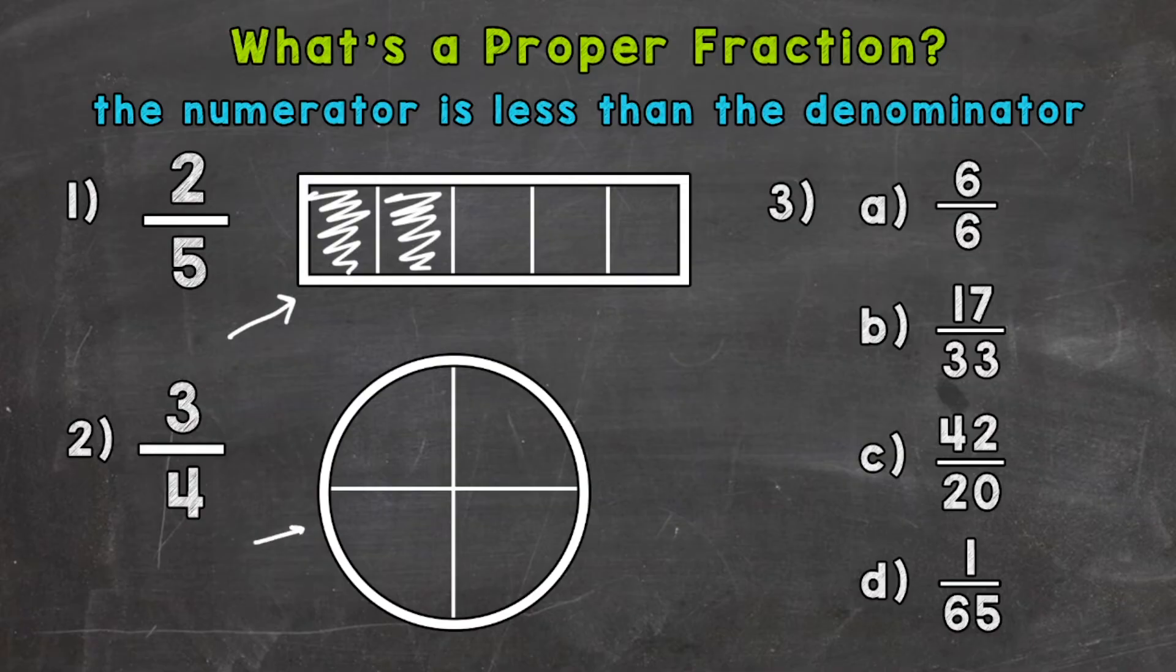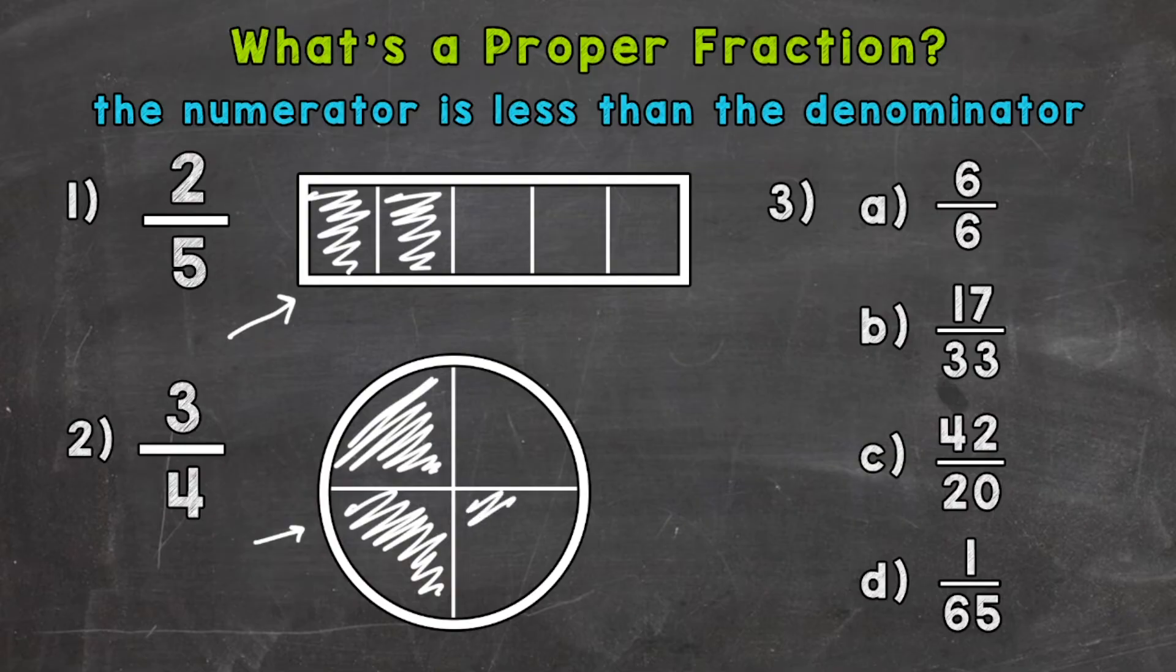We have a circle here cut into fourths, so we need to fill in three of those. So one-fourth, two-fourths, and three-fourths. So you can see that we have less than a whole there.